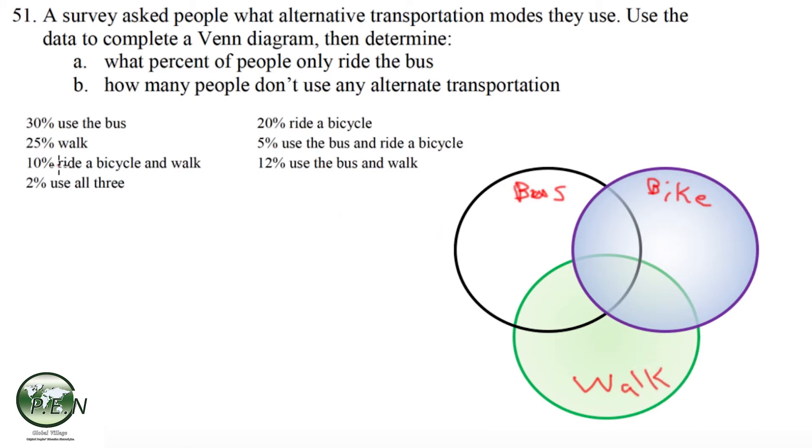To fill this in so that we can answer these questions, it's always safest to start in the center where there's the intersection of all three. So 2% use all three forms of transportation. We'll just put the number 2, and we can make the assumption that the total is 100 because that's what 100% means. So we'll treat this as if there was a survey of 100 people. Two people use the bus, bike, and walk.